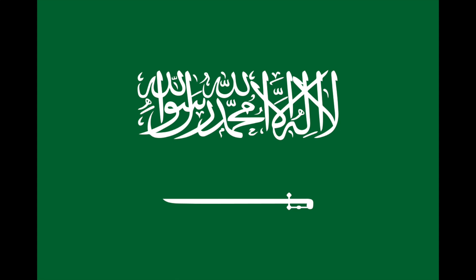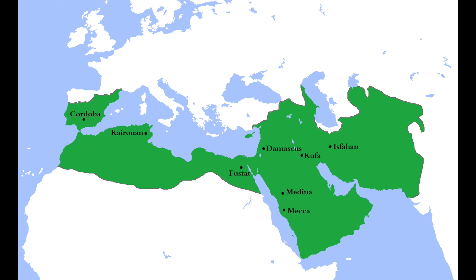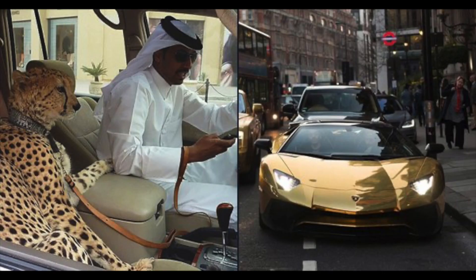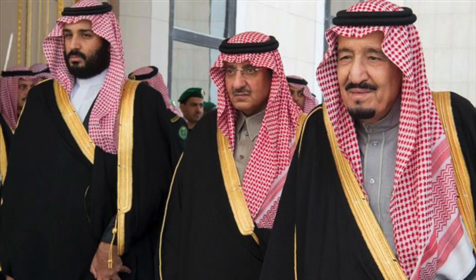The flag of Saudi Arabia, perhaps the most emblematic symbol of the modern Middle East. It resembles something that might have been flown by a medieval caliphate, yet flutters above one of the wealthiest and most geopolitically significant countries in the world. But where did it come from?